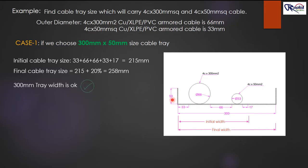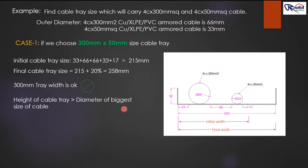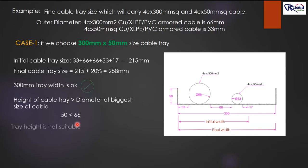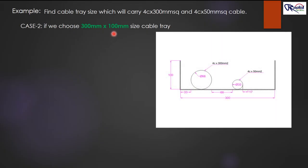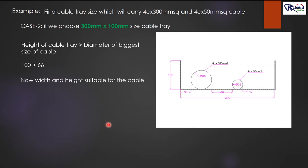Now we check the flange height. The formula is: height of cable tray must be greater than the diameter of the biggest cable. We selected 50 mm height, but the diameter of the biggest cable is 66 mm. Since 50 mm is less than 66 mm, this height is not suitable. The next available size greater than 66 mm is 100 mm. Therefore, the final selection is a 300 × 100 mm cable tray — this selection is correct.